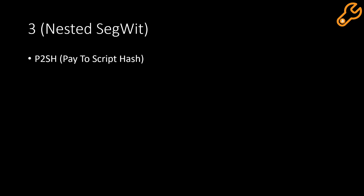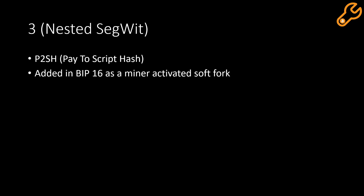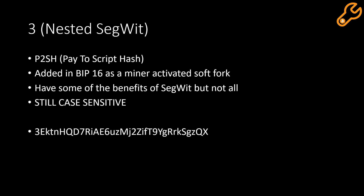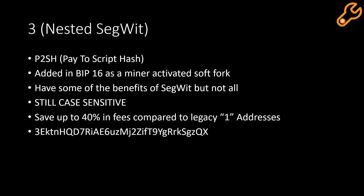The three address is also known as the nested SegWit address and sometimes known as the P2SH or pay-to-script-hash address. SegWit was added in BIP 16 by a miner-activated soft fork. It does have some of the benefits of SegWit but not all of them. Unfortunately, the three address is still case sensitive, and looks a little something like this, but thankfully you can save up to 40% in fees when compared to the legacy one address.